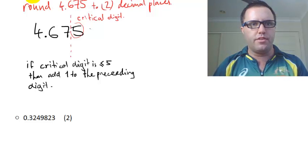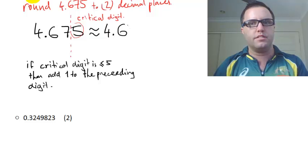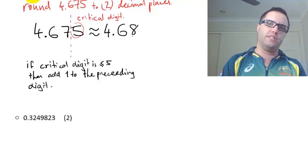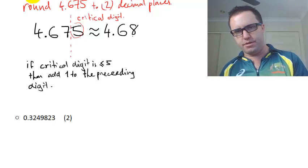So remember that we use our, is approximately equal to sign. And so that would be 4.67 plus 1 is 8. So that means that 4.675 is approximately 4.68.